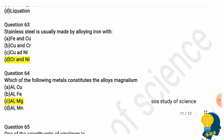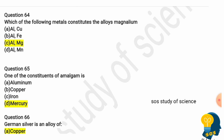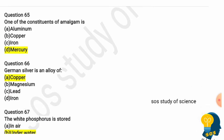Question 62: Stainless steel is usually made by alloying iron with? Options are iron and copper, copper and chromium, copper and nickel, or chromium and nickel. The correct answer is chromium and nickel. Question 63: Which metals constitute the alloy magnalium? Magnalium is a combination of magnesium and aluminium, so the correct answer is aluminium and magnesium. Question 64: One of the constituents of amalgam is? Options are aluminium, copper, iron, and mercury. The correct answer is mercury.